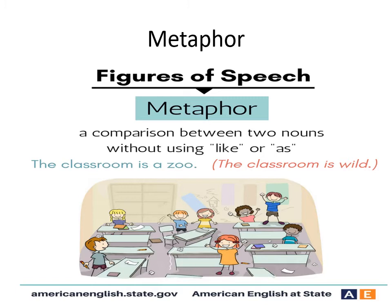Consider the classroom just after lunch break — the teacher has not yet come and students are enjoying wildly. When the teacher comes, she says 'the classroom is a zoo.' That means the classroom is violent, wild, and unruly. Without mentioning it explicitly, you understand — zoo implies wild behavior. Zoo is not applicable to a human being literally, so it conveys the wild situation. This is when we use metaphor.